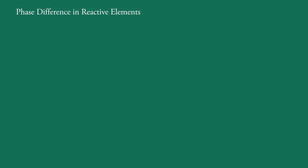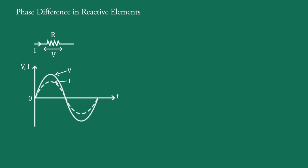In this video, we will discuss the phase difference and phasor diagram of reactive elements. Suppose an alternating sinusoidal voltage is applied across a pure resistor of R ohms. The current I through the resistance is also alternating and sinusoidal in nature, of the same frequency as that of the applied voltage.